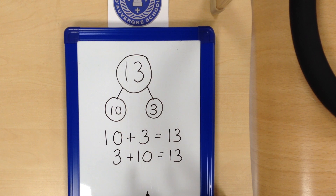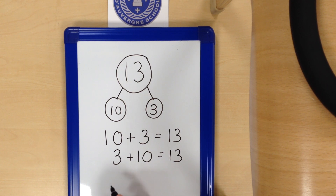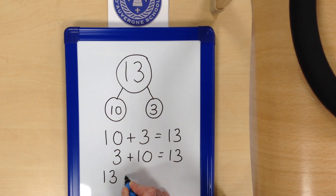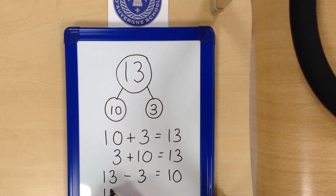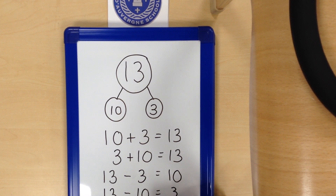We know that addition can be done in any order. We can also show this as subtraction, the inverse operation. 13 take away 3 equals 10, or 13 take away 10 equals 3.